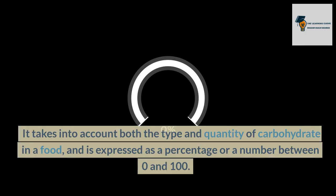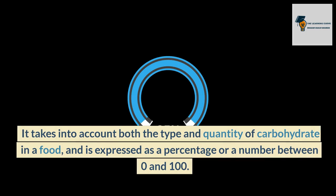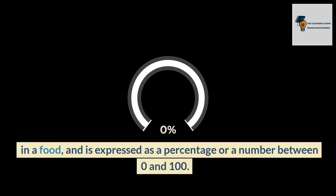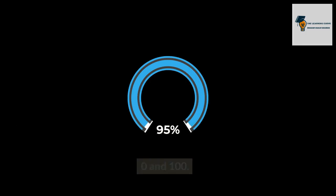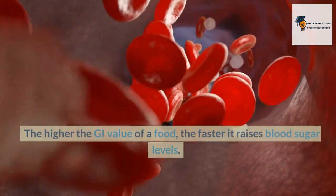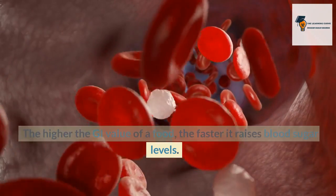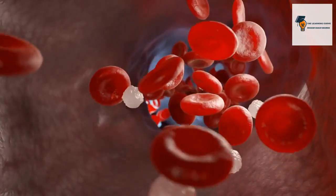It takes into account both the type and quantity of carbohydrate in a food, and is expressed as a percentage or a number between 0 and 100. The higher the GI value of a food, the faster it raises blood sugar levels.